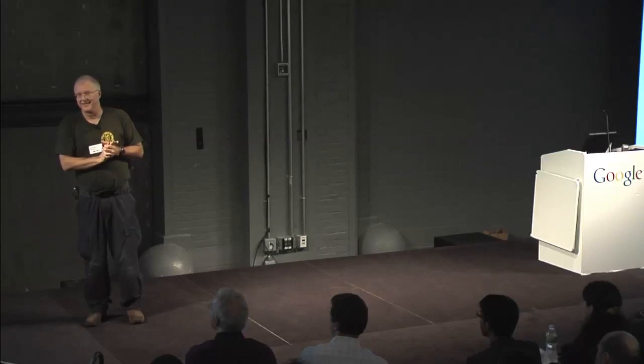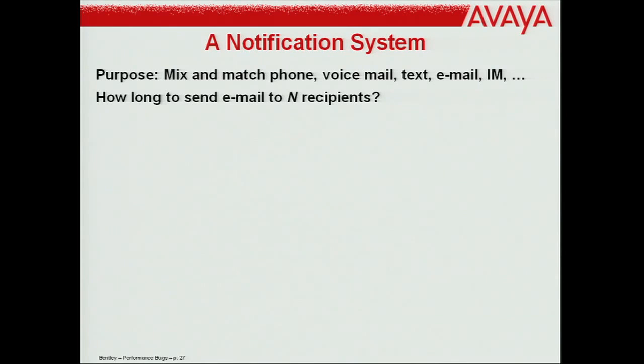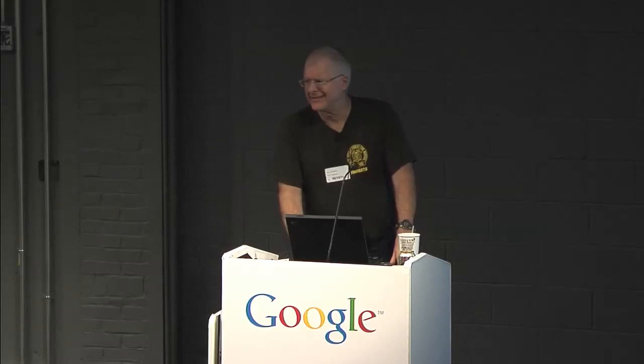After about five months of requesting and pleading, we finally got the test. One test: how long to send email to end recipients? To 1,000 recipients: 11 seconds. To 2,000: longer. To 4,000: way longer. In some companies you'd want to send email to 100,000 employees — it would have taken 29 hours. They were hoping for minutes. Quadratic growth in real terms is horrible. Most tests passed fine, but by testing each dimension independently we forced the scaling issue to surface.